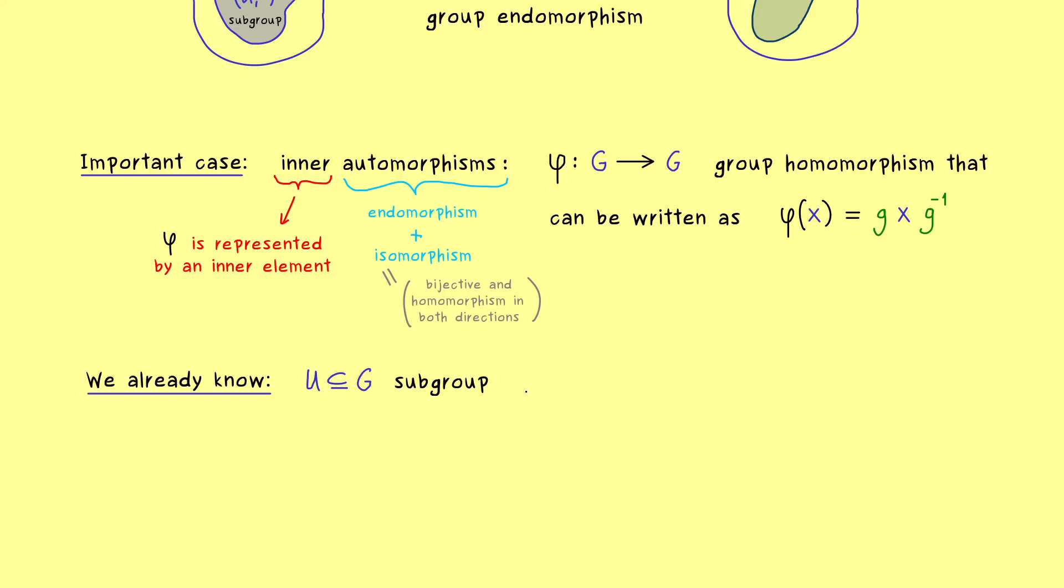So for example we already know that if we have a subgroup U in G then we can form the preimage and the image of U under φ. And now both things are definitely subgroups in G again. And now by using the definition of φ we see that these subgroups are related to our original subgroup U by using the element g.